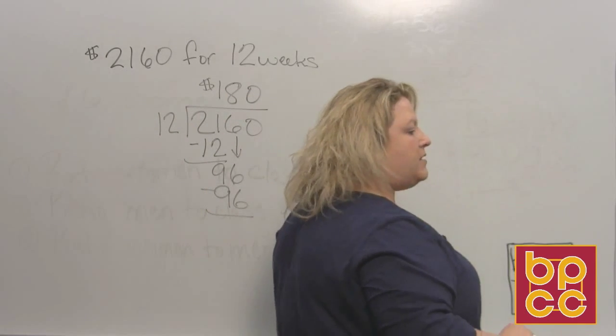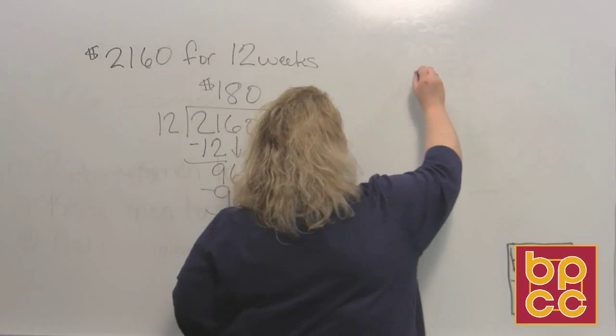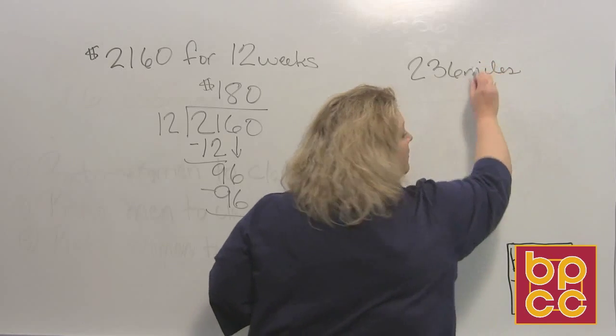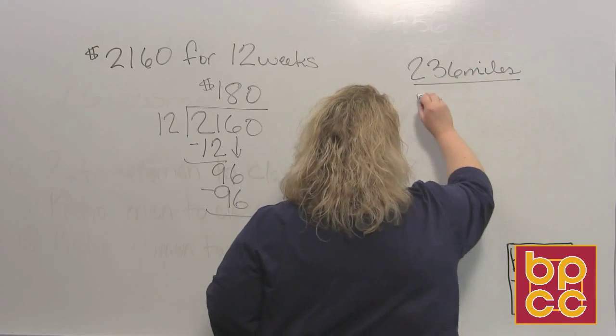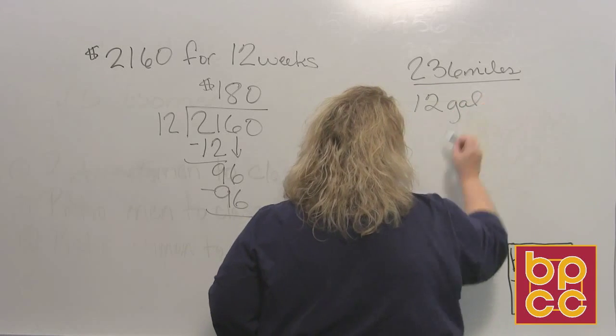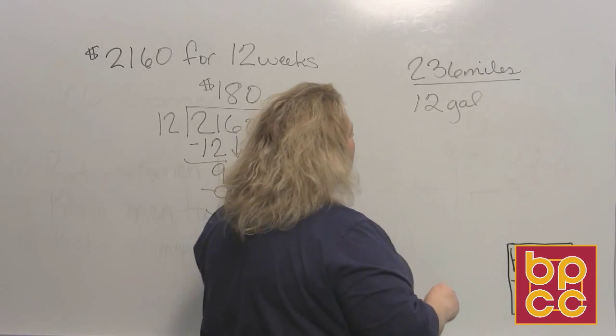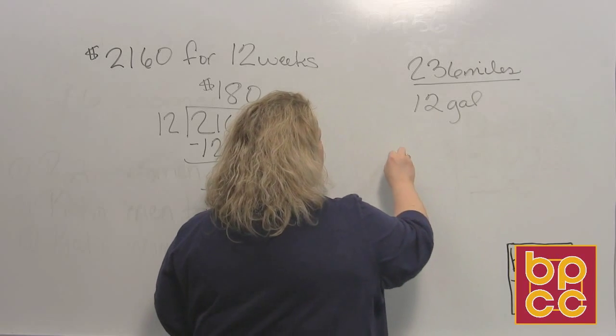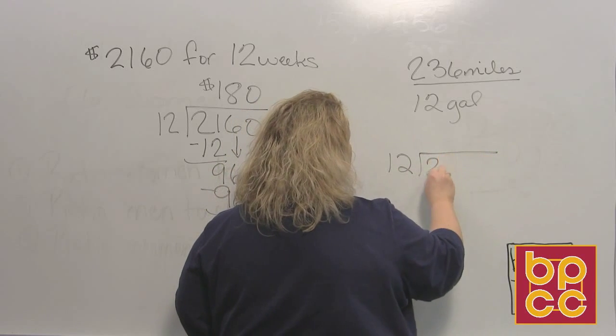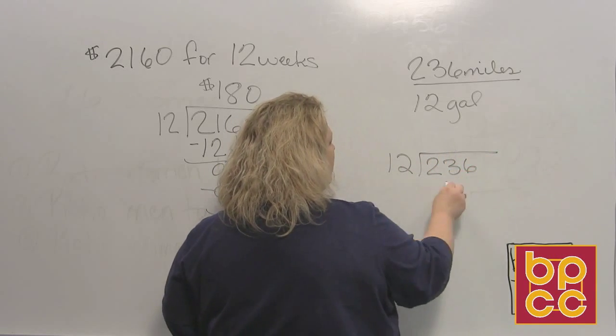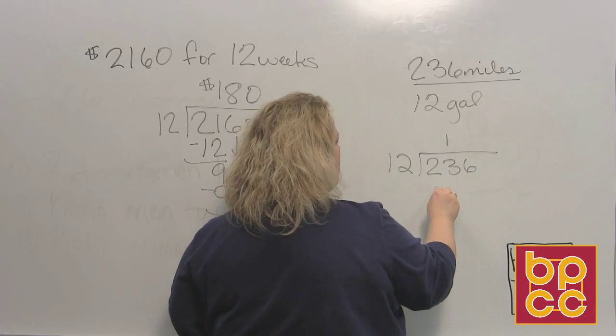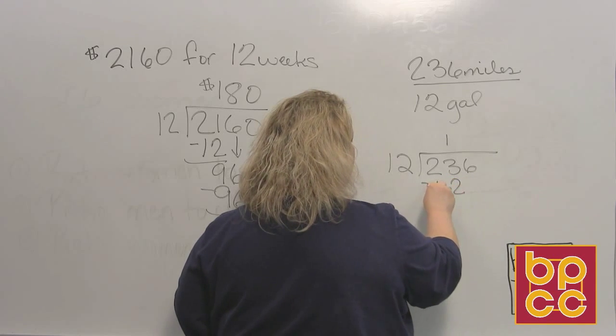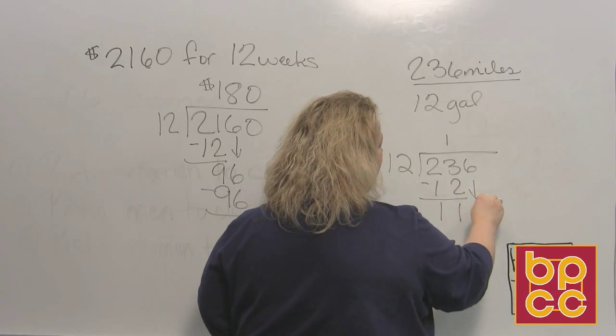And then the last one is 236 miles on 12 gallons of gas. Okay, so sometimes you see unit rates written like this, and again, all it is is division. So we have 12 divided into 236. So 12 goes in there one time again, and that gives me 11. Bring down the 6.